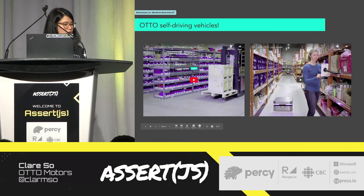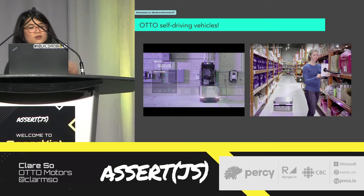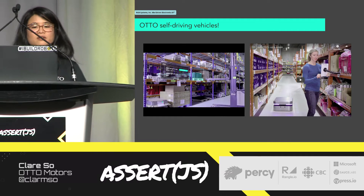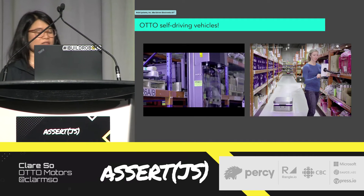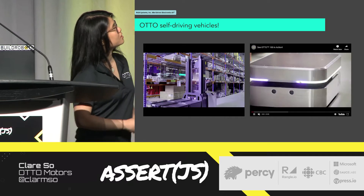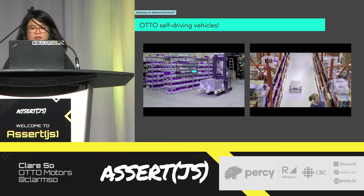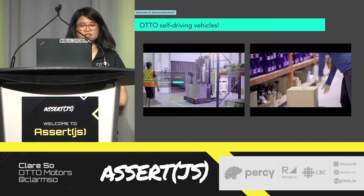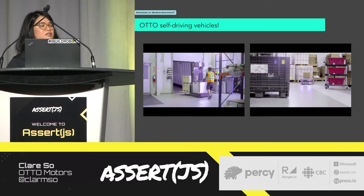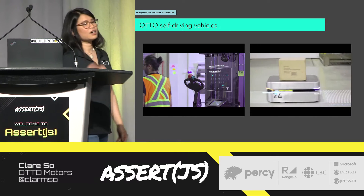Just to give you a sense of what kind of self-driving vehicles that I'm working on — on your right is the Auto Omega. This vehicle is a lift truck that moves heavy pallets. And on your right is the Auto 100, our smallest vehicle. It moves lighter materials such as bins and boxes. They are both considered self-driving vehicles because they can move, detect, and avoid obstacles safely and autonomously.